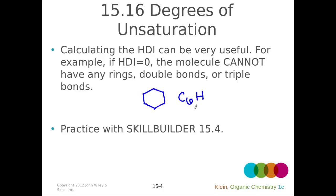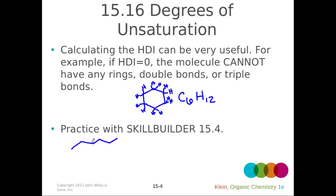If we have an HDI of zero, the molecule doesn't have any rings or any double bonds. Let's think about what a molecule with a ring would look like — take cyclohexane. What would be the formula for cyclohexane? We have six carbons, so C6, and we have two hydrogens on each one of those carbons. Counting them up: 2, 4, 6, 8, 10, 12. So that's C6H12.